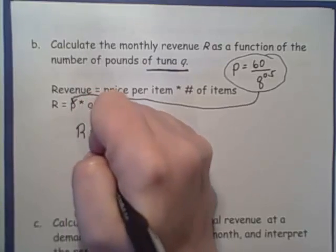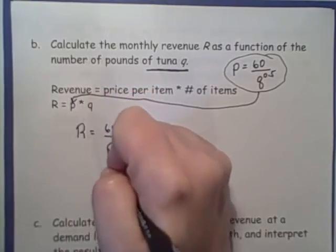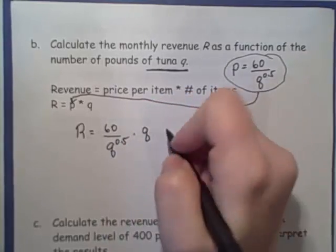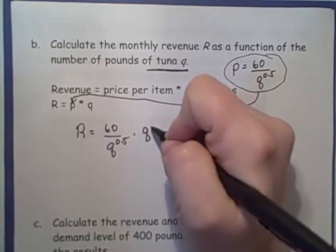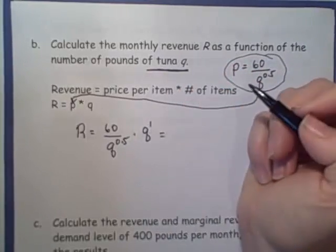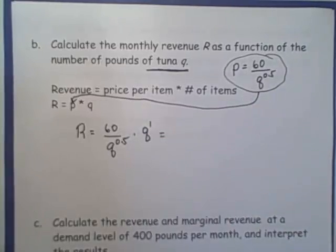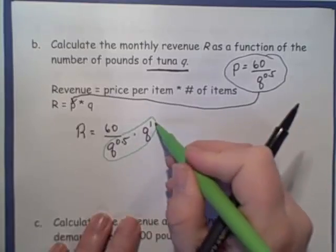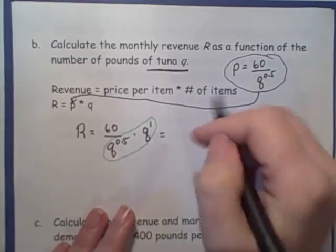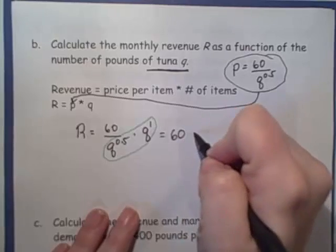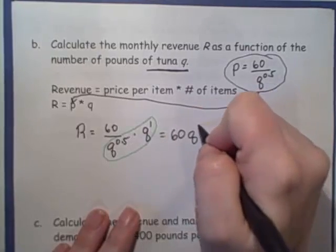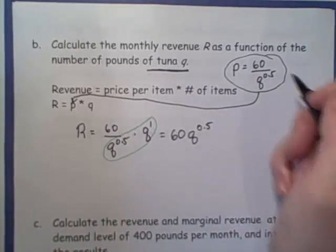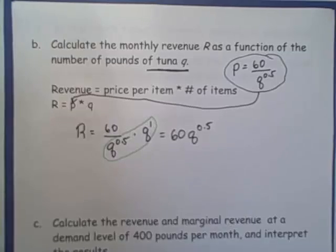So I'm going to take this formula here and plug it in for my P. I'm going to have revenue equals 60 over Q to the 0.5 times Q. Now here, this exponent on this Q is really a 1, right? And so in order to combine those two Qs, you're going to subtract those exponents. So we're going to have 60 times Q to the 1 minus 0.5, so that's going to be 0.5. Okay, so we've completed part B.